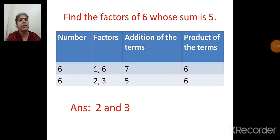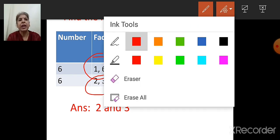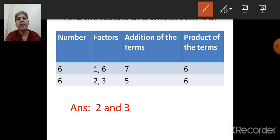This table will help us find the factors. The question is: find the factors of 6 whose sum is 5. We have to find the factors of 6. The factors of 6 are: 1 and 6, and 2 and 3. So there are 2 pairs: 1 and 6, or 2 and 3. First, we find the factors. The first pair is 1 and 6 — 1 is always a factor and the number itself.